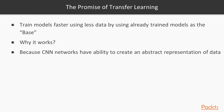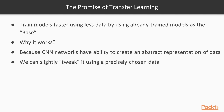Why does it actually work? The main idea is that CNN networks have the ability to create abstractions of data. The deeper you are in the network, the more abstract the representation of the data is. That means you can take advantage of it — you can input your new data and slightly tweak this already trained network.